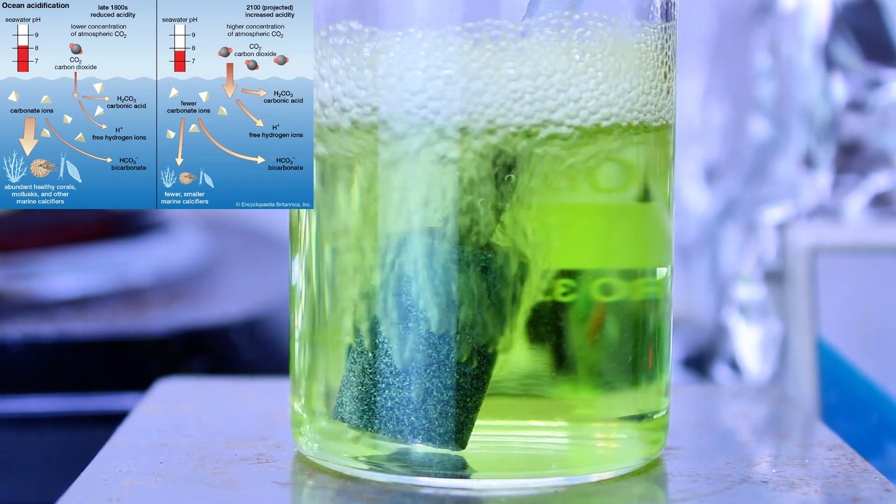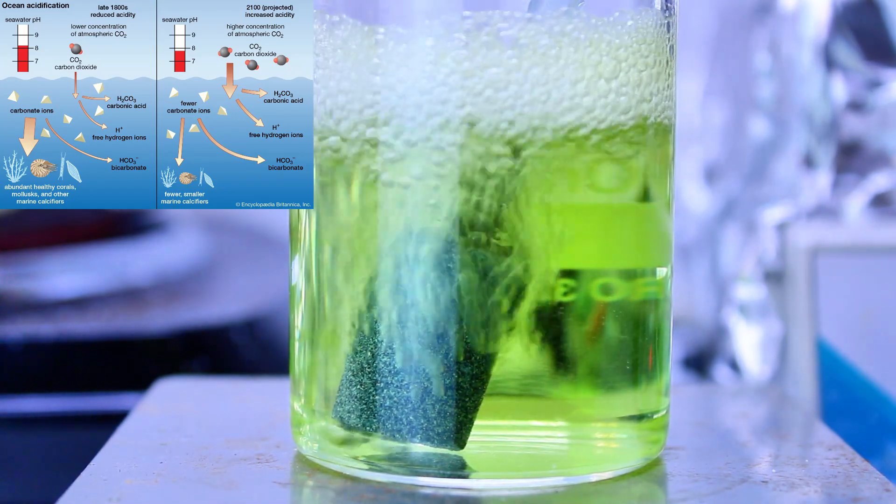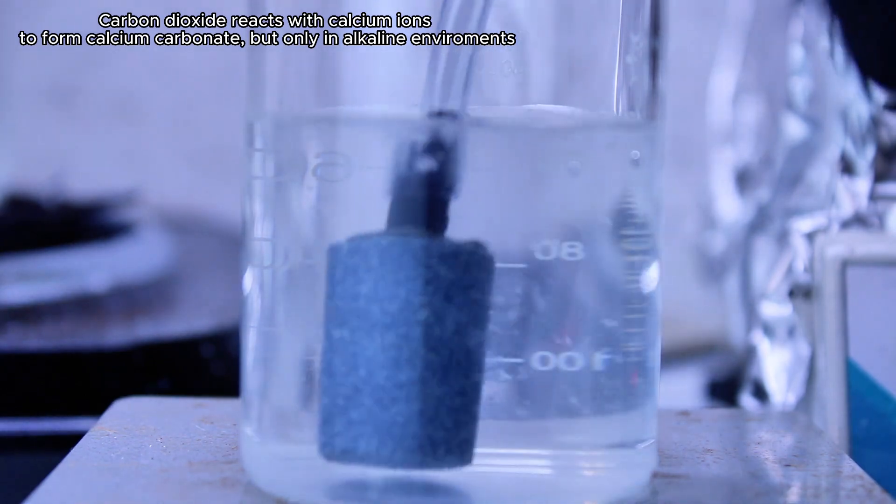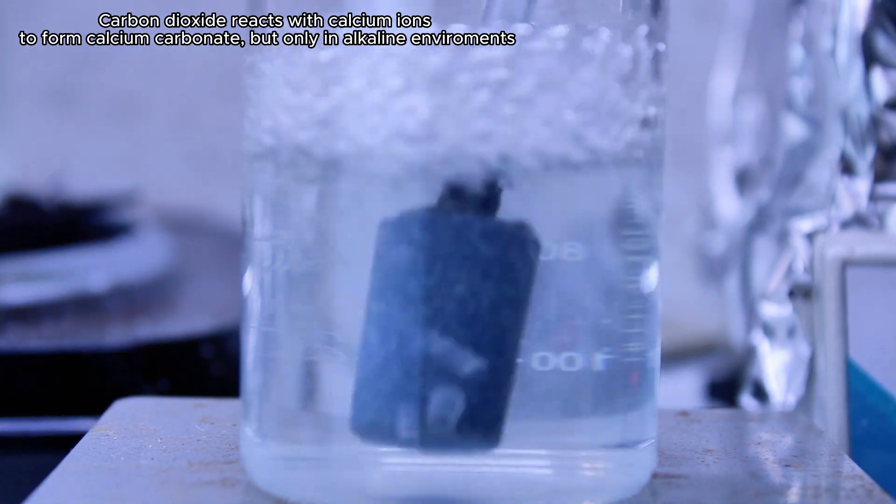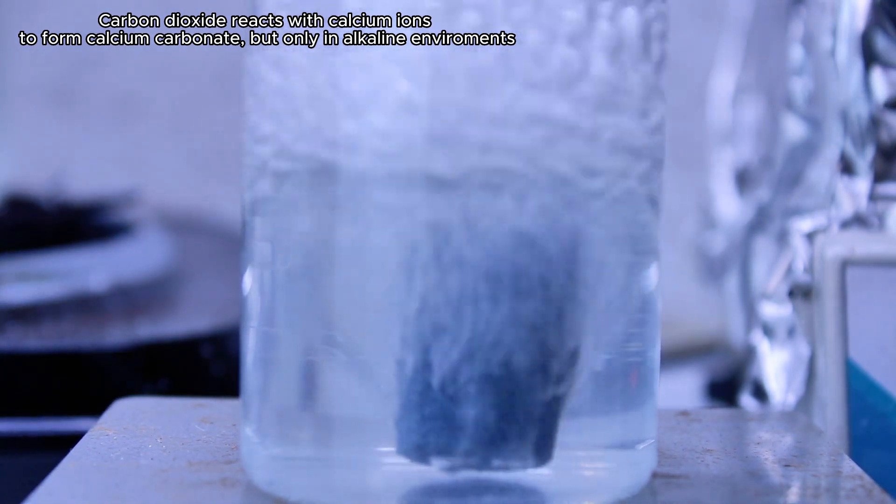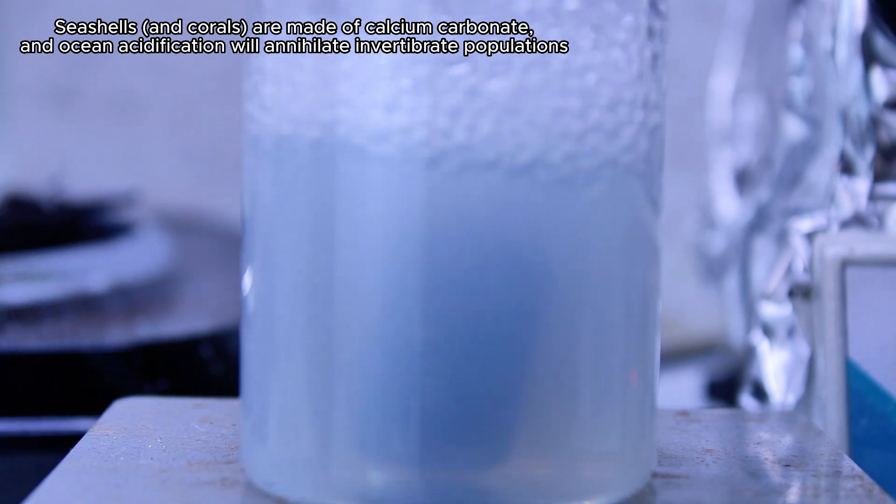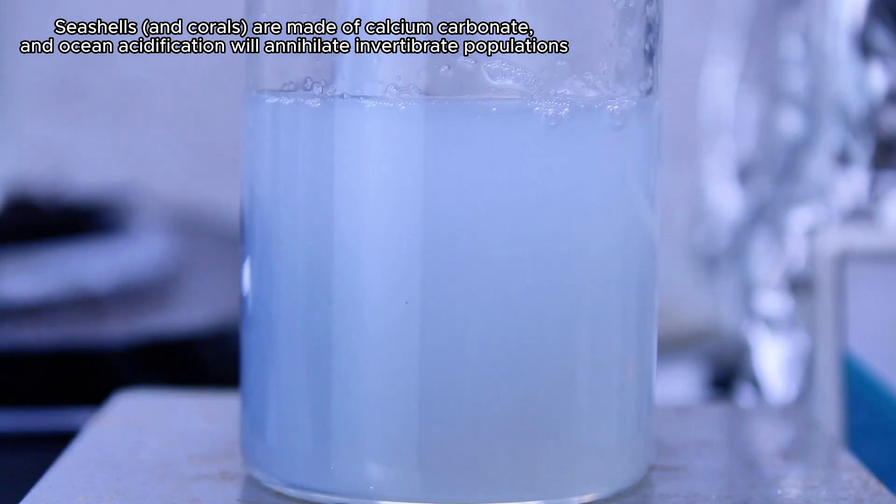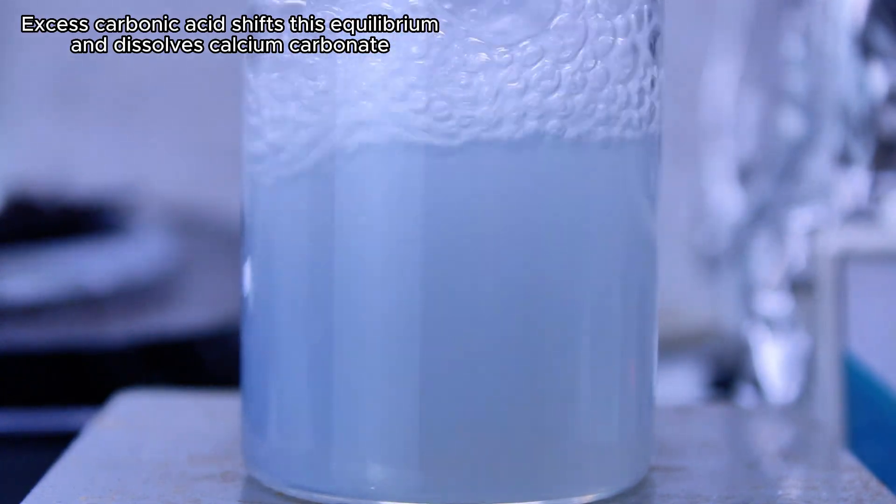In alkaline environments like the ocean, this carbonate binds to calcium to form calcium carbonate, which I'm demonstrating here by blowing air into a solution of calcium hydroxide. Marine invertebrates build their shells out of calcium carbonate, so as the proportion of CO2 in the ocean increases, favoring the formation of carbonic acid, those shells weaken as they dissolve.